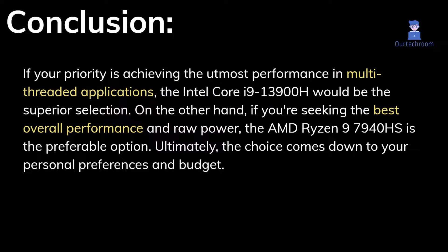If your priority is achieving the utmost performance in multi-threaded applications, the Intel Core i9-13900H would be the superior selection. On the other hand, if you're seeking the best overall performance and raw power, the AMD Ryzen 9 7940HS is the preferable option. Ultimately, the choice comes down to your personal preferences and budget.